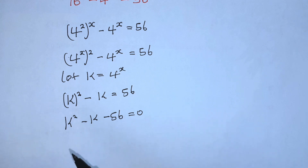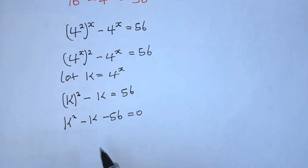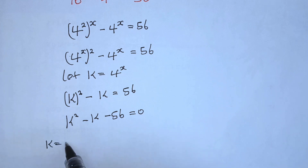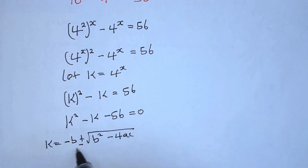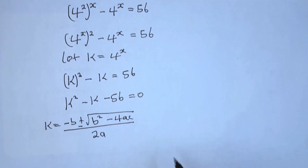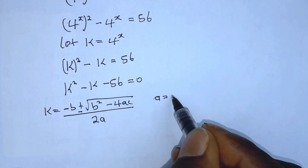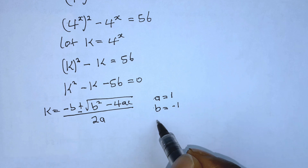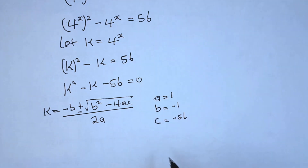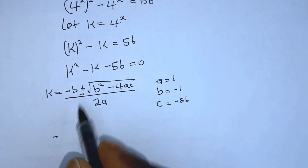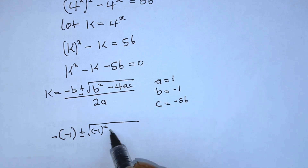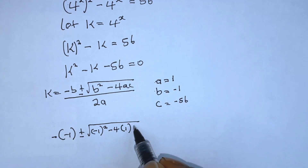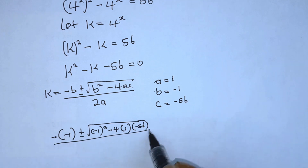To solve this quadratic equation we can use the quadratic formula or any method you are used to. Using the formula: k equals negative b plus or minus the square root of b squared minus 4ac, all over 2a. Here, a equals 1, b equals negative 1, and c equals negative 56. Substituting: 1 plus or minus the square root of negative 1 squared minus 4 times 1 times negative 56, all over 2 times 1.